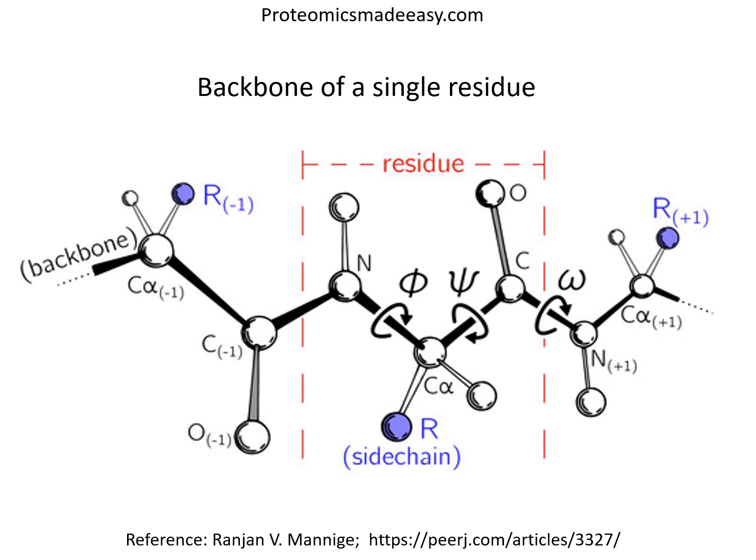We know that the backbone of a protein, as you see here, can twist and turn into numerous conformations or folds, partially due to the amino acid sequence in proteins. If you understand how a backbone twists, you can understand the structure of a protein and hence you can also understand how a protein functions.